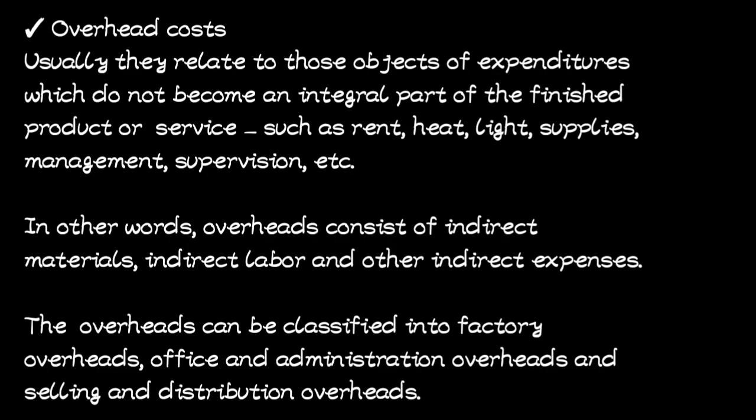Another cost under classification by nature is overhead costs. Overhead costs consist of expenditures that do not become an integral part of the finished product or service — they are not part of the product, but they must be there in order for an activity to take place. These include things like rent, heat, light, and supplies. For example, when you go to a restaurant to buy food, they will not put the rent they pay on the menu — it doesn't form part of the product, but it's there. In short, overhead costs are indirect costs: indirect materials, indirect labor, and other indirect expenses. Overhead costs can be classified into factory overheads, office and administration overheads, and selling and distribution overheads.